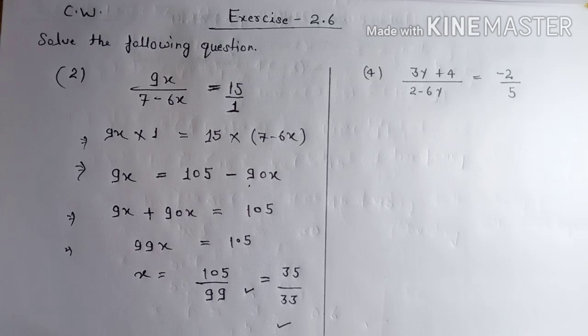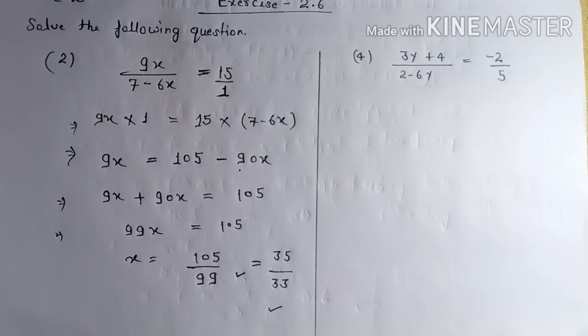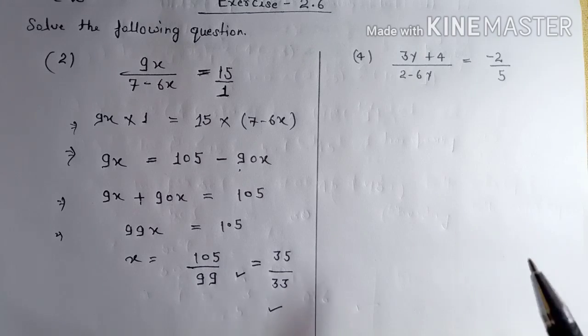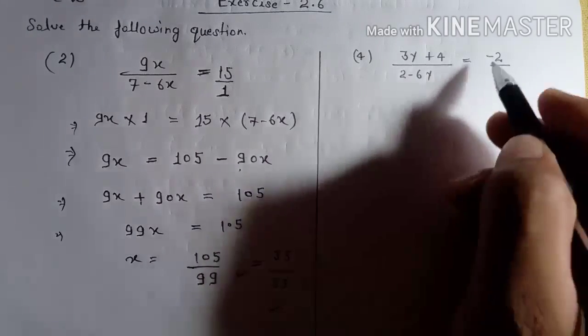We have the second part: question number four — three y plus four upon two minus six y is equal to minus two upon five. How to solve this question? Again, cross multiplication.